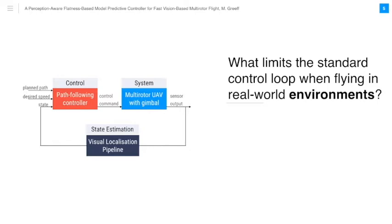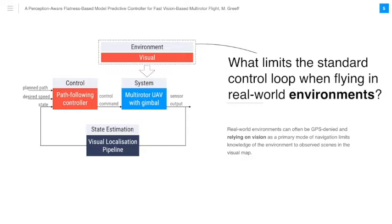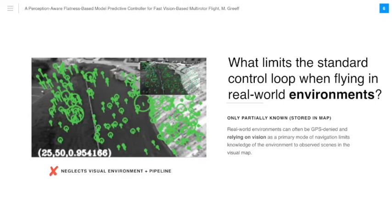So what limits the standard control loop when flying in real world environments? The key word is environment. To be more specific, real world environments can often be GPS denied, and so relying on vision as a primary mode of navigation limits knowledge of the environment to observed scenes stored in the visual map. Real world environments are only partially known to those visual scenes that are stored in the map. In our standard control loop, the controller neglects the effect of the visual environment and pipeline.